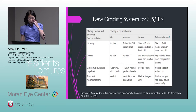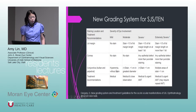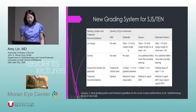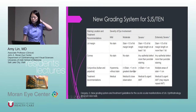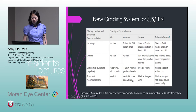Mild SJS was defined as no staining of the lid margin, no staining of the cornea, hyperemia of the conjunctiva with no staining — treatment recommendation there is medical. Moderate disease was defined as staining of less than one-third of the lid margin, no staining on the cornea, and small staining on the conjunctiva less than one centimeter. This could also be observed and treated medically.